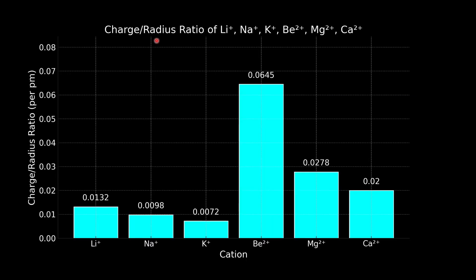Here is the charge by radius ratio of lithium plus, sodium plus, and potassium plus. All three of them belong to group 1. And clearly, we can see that lithium has the highest charge by radius ratio. Let's check it for group 2 as well. You can see beryllium 2 plus, magnesium 2 plus, calcium 2 plus, and beryllium 2 plus has the highest charge by radius ratio. So, this is one of the reasons why second period element shows these anomalous behavior.